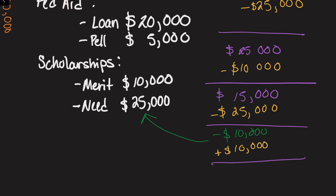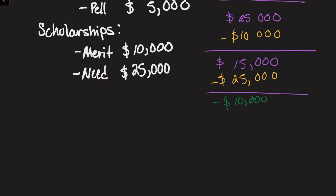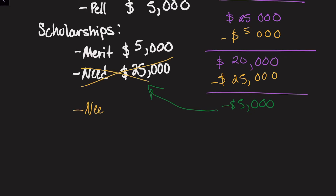So your new need is zero dollars. Alternatively, they may adjust the merit-based scholarship amount — since you have a surplus of $10,000, they'll lower your merit-based scholarship to $5,000. That creates a new surplus of $5,000, which they send back to your need-based scholarship. So your new need-based scholarship becomes $20,000 and your new need is zero dollars.